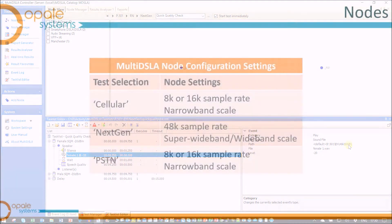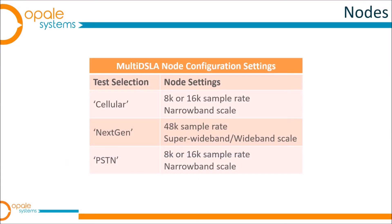It's just a little beyond the scope of this article, but here are the corresponding node configuration settings that we would normally wish or need to use with each of those three types of tests—you may remember the Cellular, NextGen, and PSTN selection.